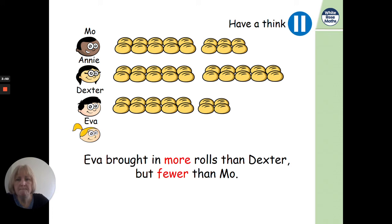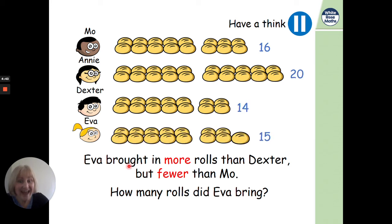Okay. Eva brought in more rolls than Dexter, but fewer than Mo. Hang on, let's think. Let's get the laser and have a little think about this one. Eva brought in more rolls than Dexter. So, she brought more than Dexter. So, Dexter's brought in 10 and 4, 14. More than 14, but fewer than Mo. Where's Mo? Mo brought in 10, 11, 13, 14, 15, 16. So, she brought less than Mo. 16. What comes before 16? 15, maybe. And more than Dexter, 14. Yes. If Eva brought in 15. Yes. She's brought in one more than Dexter. So, she's brought more than Dexter, but she's brought less than Mo. That was a bit tricky.